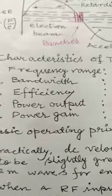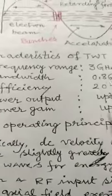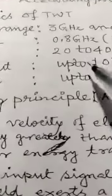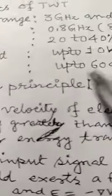We are going to see the characteristics of TWT. The frequency range is 3 GHz and higher, bandwidth 0.8 GHz, efficiency 20 to 40%, output power up to 10 kW average, power gain up to 60 dB.